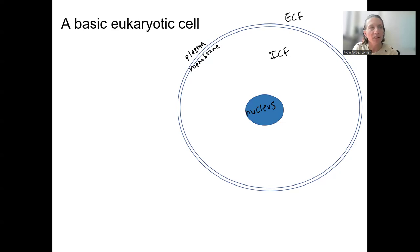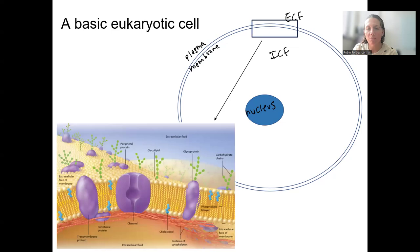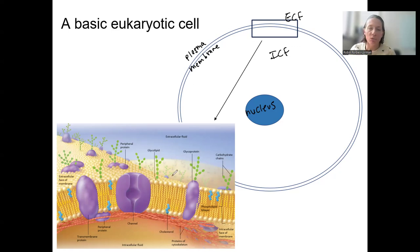If we zoom in to a small section of this plasma membrane, it looks a lot more complicated than these two lines, which are sometimes drawn as just a single line. It's two lines because it is a bilayer.